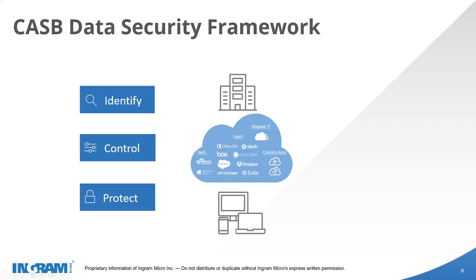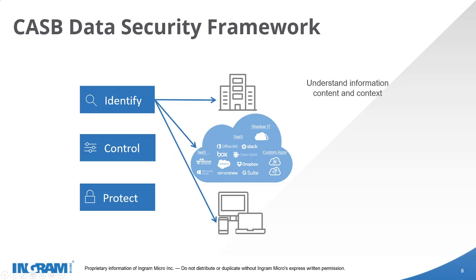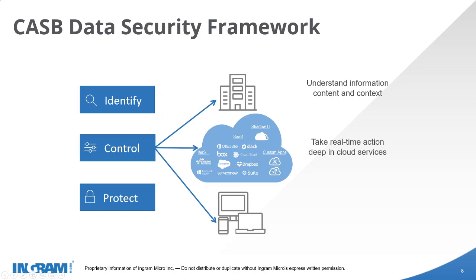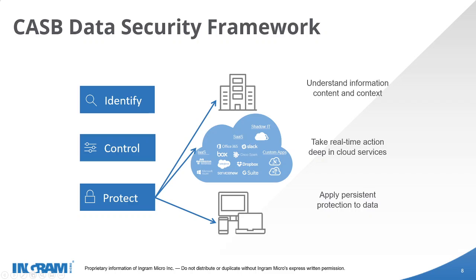With a CASB, it helps us to identify the type of data, gives us visibility into the types of devices that are connecting, the users that are connecting, as well as the type of data being sent to these cloud applications. By getting visibility, we then have the ability to have control and take real-time actions. So if anything violates any type of policy, we have the ability to take control and block that from taking place, applying persistent protection across our entire organization.